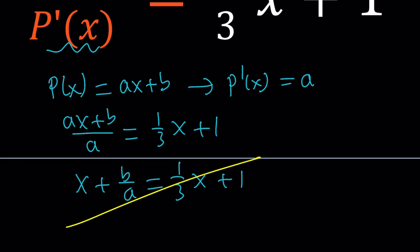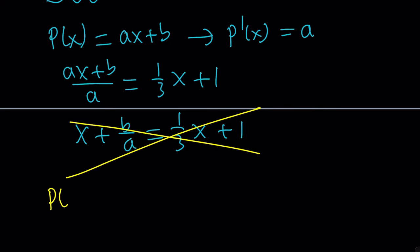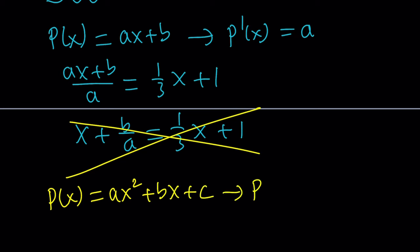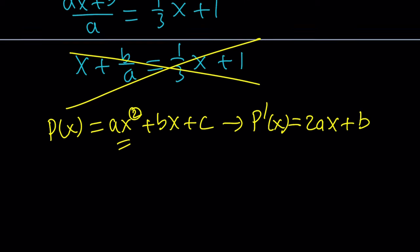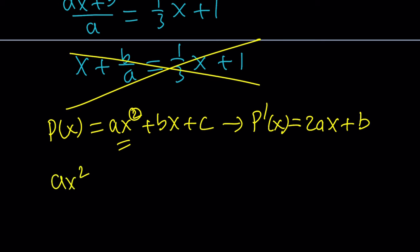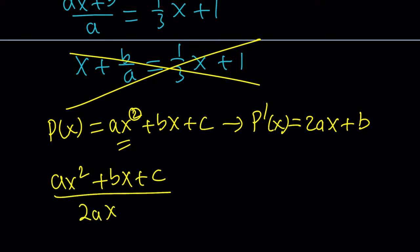Let's try the quadratic case. What happens if P of X equals AX squared plus BX plus C? Its derivative is 2AX plus B. Now we're going to divide P of X, which is AX squared plus BX plus C, by its derivative 2AX plus B, and we're supposed to get 1 over 3X plus 1.